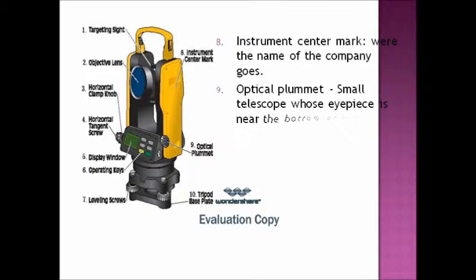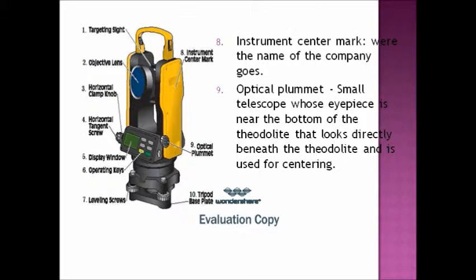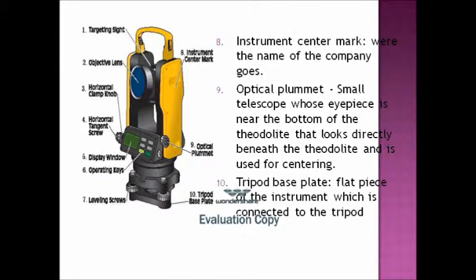Below that we have the optical plummet. Small telescope whose eyepiece is near the bottom of the theodolite that looks directly beneath the theodolite and is used for centering. Below that is the tripod base plate. Flat piece of the instrument which is connected to the theodolite.